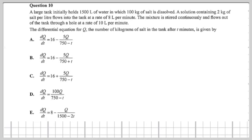So we've got a large tank, which initially holds 1,500 litres of water, in which 100 kilograms of salt is dissolved, and a solution containing 2 kilograms of salt per litre, which I'm wondering how on earth you would ever get 2 kilograms of salt in any litre of water. I would imagine it would be fairly difficult. It flows into the tank at the rate of 8 litres per minute, and the mixture is stirred continuously. And it flows out of the tank faster at a rate of 10 litres per minute. So the volume of this tank is going down at the rate of 2 litres every minute, ladies and gentlemen.